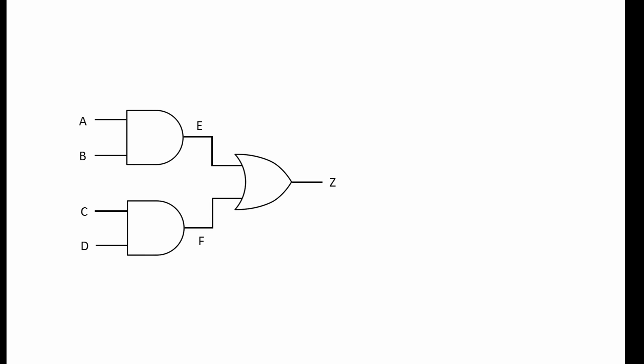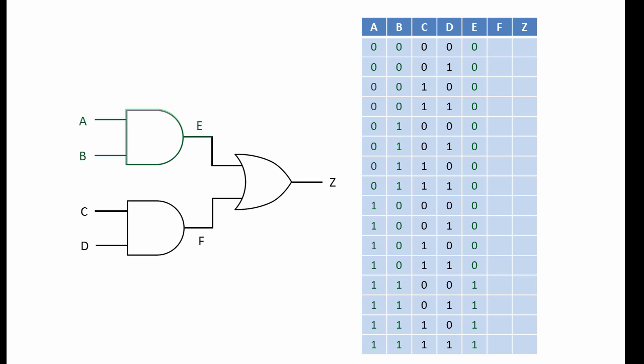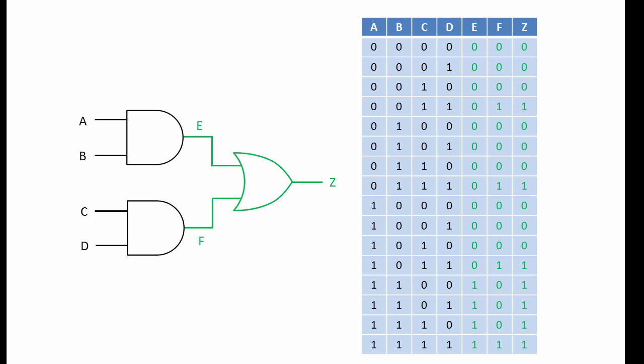In this example, we have four inputs. That means we are going to need two to the power of four — that's sixteen combinations of inputs, and therefore sixteen rows in the truth table. Perhaps you would like to give this one a go yourself. Here is the solution. Notice how we are counting from zero to fifteen as we read down the combinations of input values. Each value of E is A AND B. Each value of F is C AND D. And each value of Z is E OR F. If you have done yours as suggested, you should have exactly the same truth table.